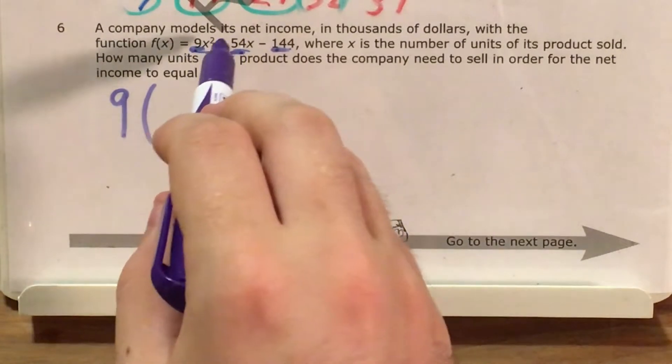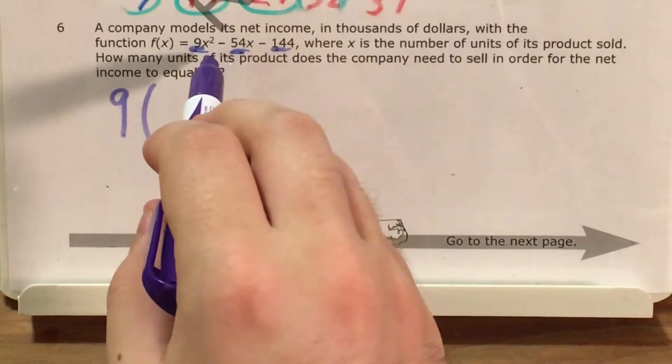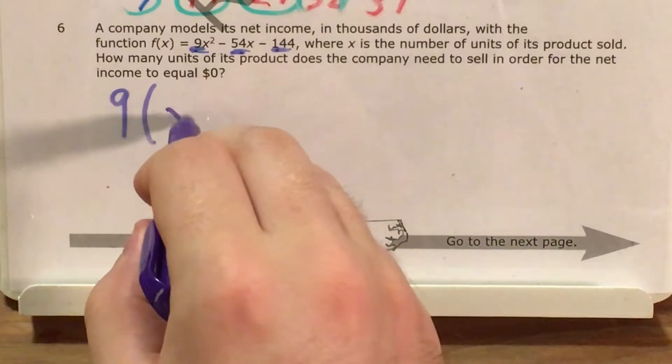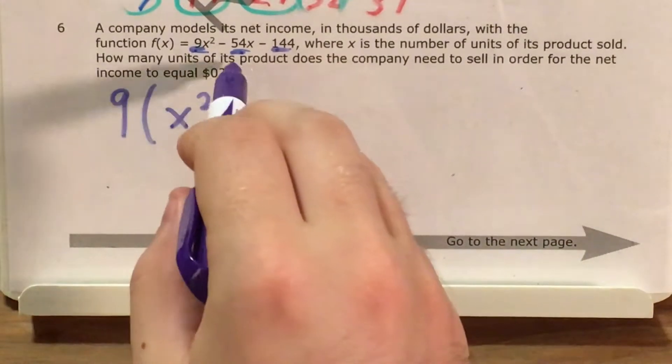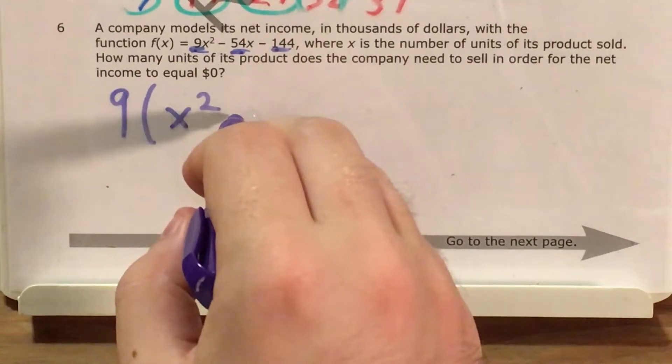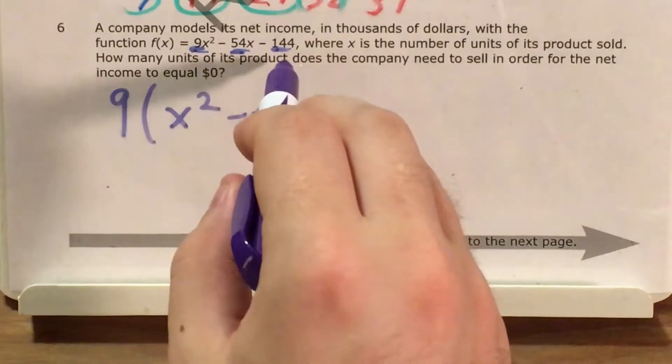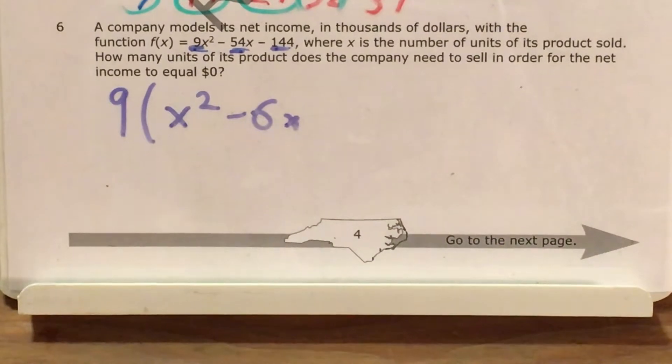So 9x squared, we pull 9 out from that and we're just left with x squared. 54, if you remember from times tables, is 9 times 6, so minus 54x becomes minus 6x. And now for 144, I'll actually demonstrate a bit of long division here.